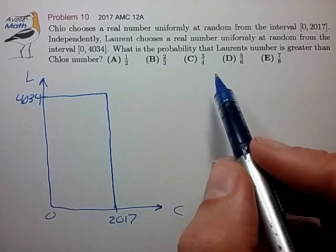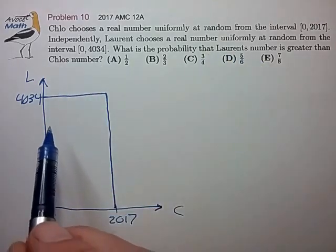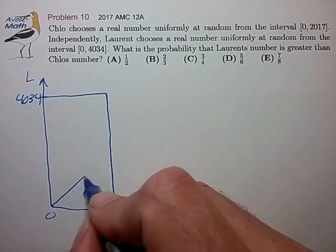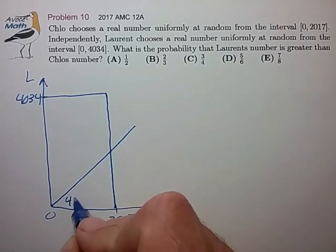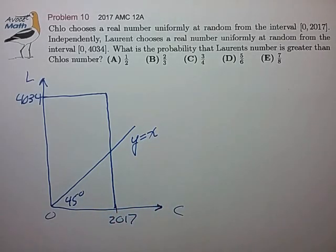And it looks like we're trying to find the probability that Laurent's number is greater than Clo's number, so that's the condition where the number L lies above the 45-degree line, kind of the line where Y is equal to X.